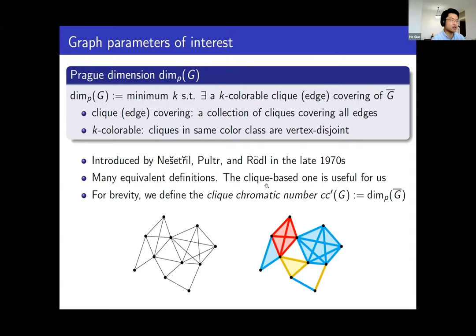For convenience, we define the clique chromatic number to be the proc dimension of the complement graph of G itself — that is, the minimum k such that there exists a k-colorable clique coloring of the graph G itself. We define it as the clique chromatic number of graph G.